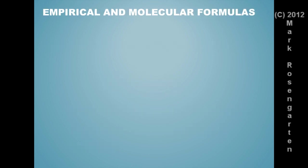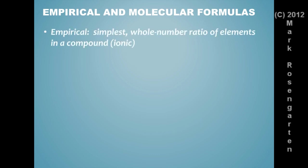It's also important to know the difference between empirical and molecular formulas. Empirical formulas are the simplest whole number ratio of elements in a compound. We use these for ionic compounds. For example, in NaCl, there is a one-to-one ratio of sodium ions to chloride ions in the compound. So if there's like a million sodium ions, there'll be a million chloride ions. It's a one-to-one ratio.